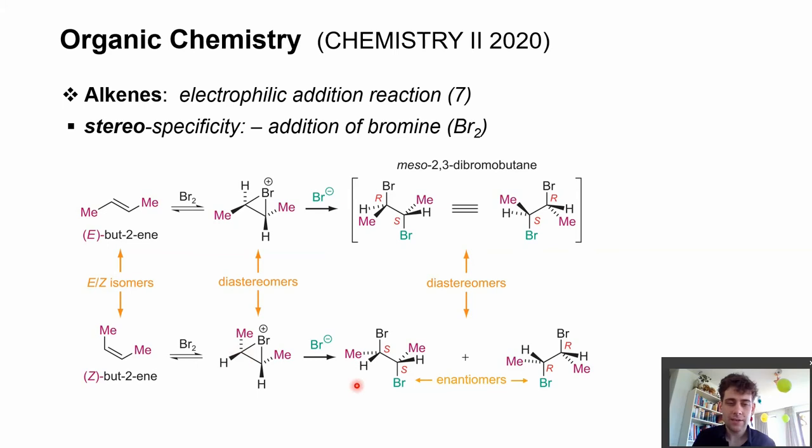Here we are actually getting the S,S enantiomer or the R,R enantiomer. The stereoselectivity is now different, and this is important to remember—that you can see which product you want to make and then choose your starting material accordingly.